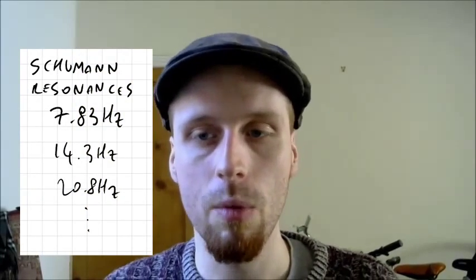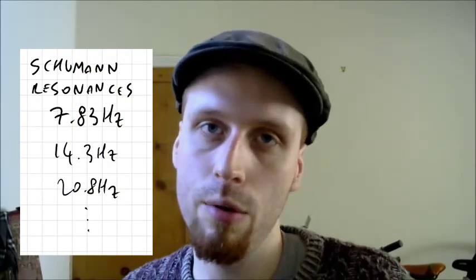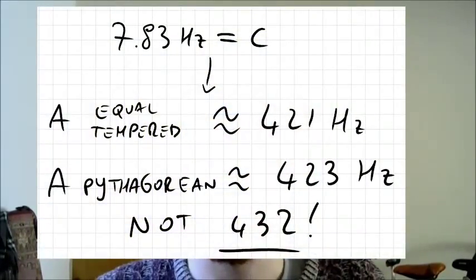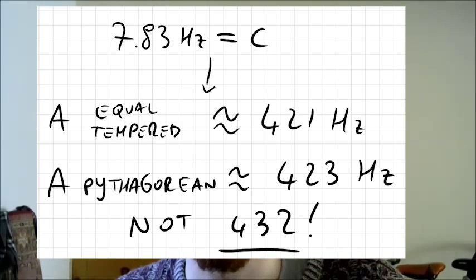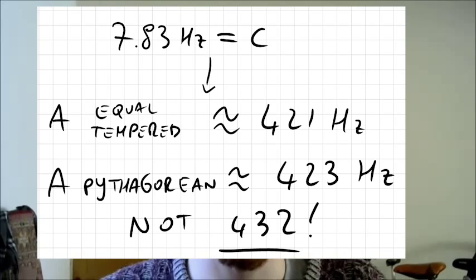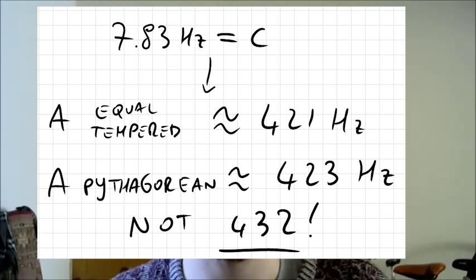Another problem is that the Schumann resonances — the lowest one — is actually closer to 7.83 Hz. What this means is that if we do the same thing and derive our concert A based on this frequency, then in the equal-tempered system the tuning A would be 421 Hz, which is quite low, or in Pythagorean tuning it would be 423 Hz.